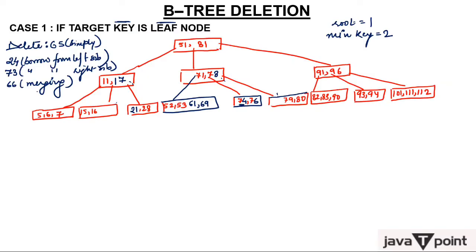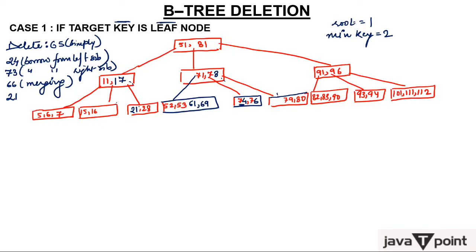Let me discuss one more interesting case: delete 21. Does 21 have a right sibling? No. Does 21 have a left sibling? Yes — but the left sibling says 'Sorry, I cannot help you, I am having minimum number of keys.' In that case nobody will help, so this will get merged. When merging, 21 is deleted, and the parent element 17 — which is between these two nodes — comes down.